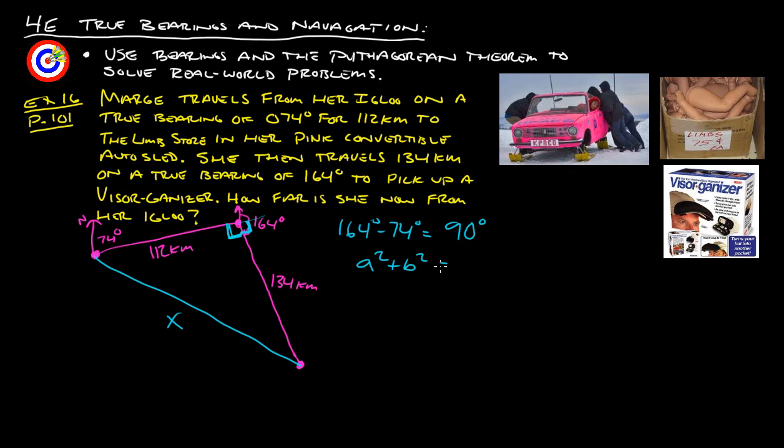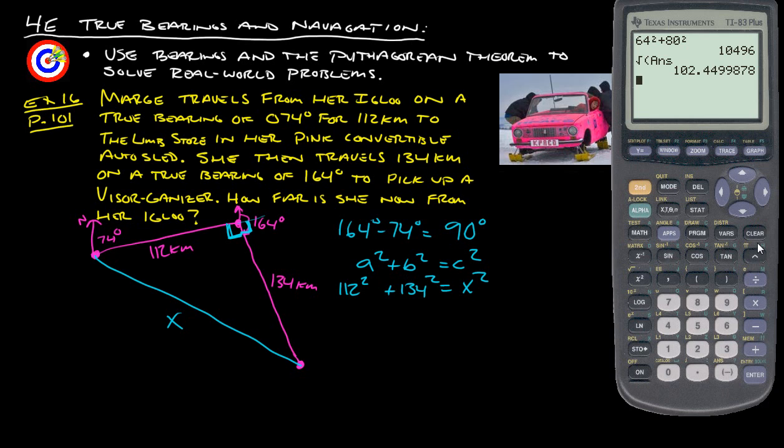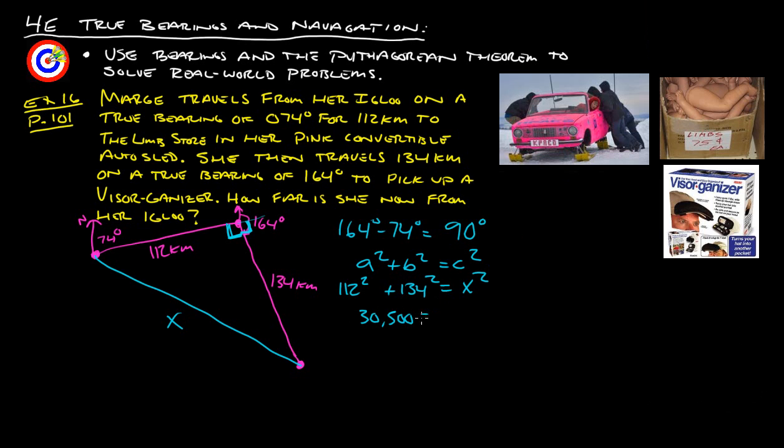Now back to A squared plus B squared equals C squared. The X goes in our C squared spot. The 112 kilometers goes here. The 134 goes there. We square those and add them together. Let's do that. 112 squared plus 134 squared gives us 30,500 equals X squared.